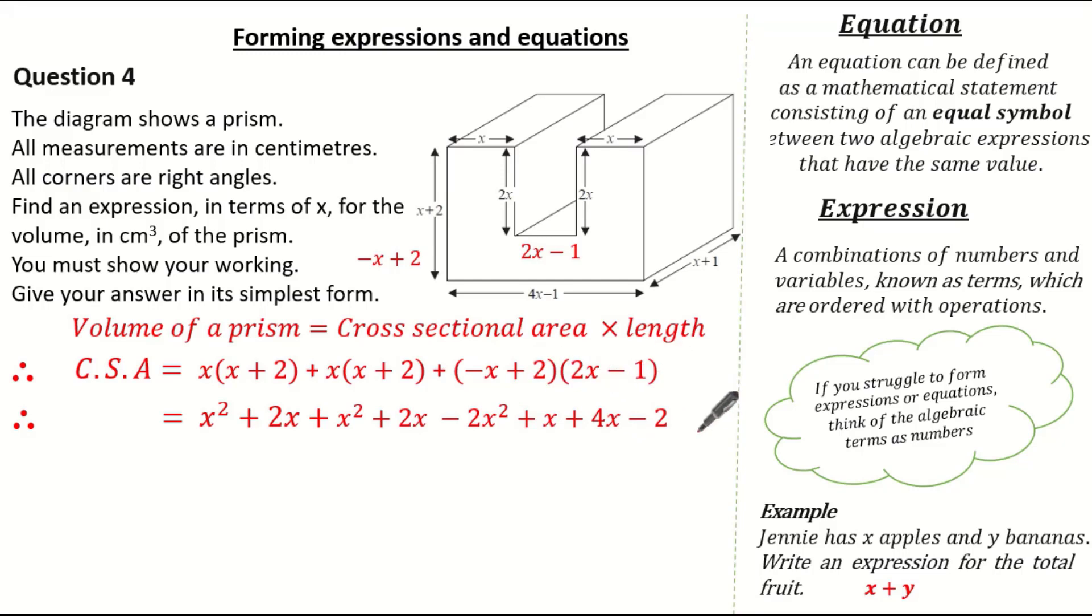Collecting all our like terms, we have x squared plus x squared minus 2x squared is nothing. 2x plus 2x plus x plus 4x is 9x. And we have our minus 2. So therefore, the cross-sectional area is 9x minus 2.